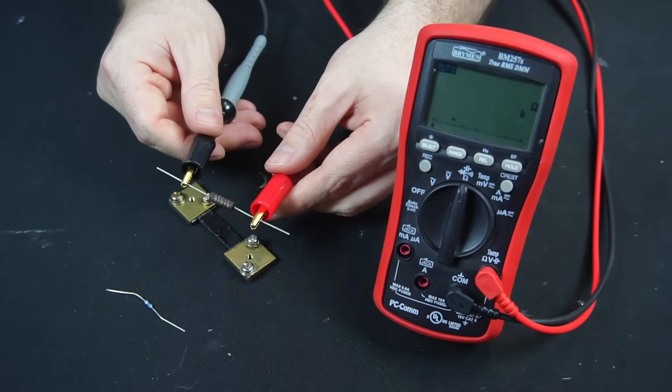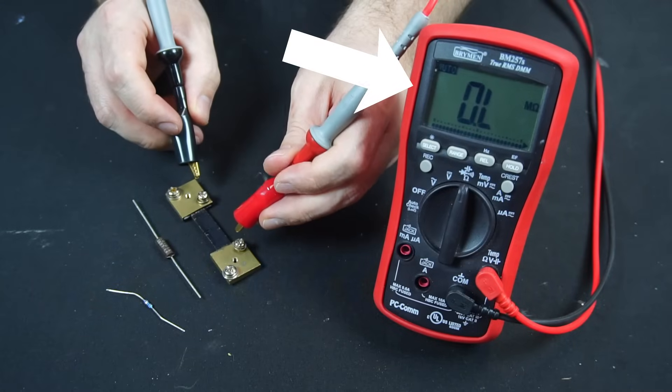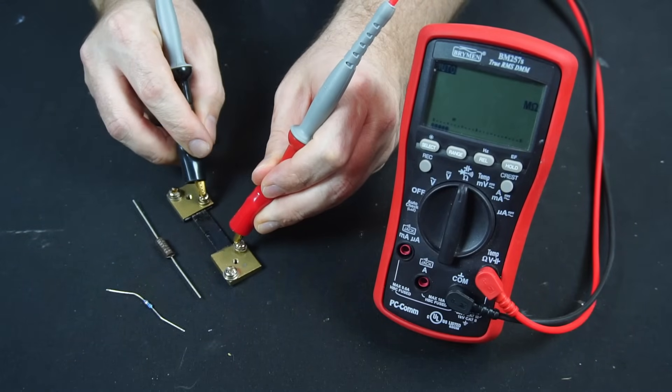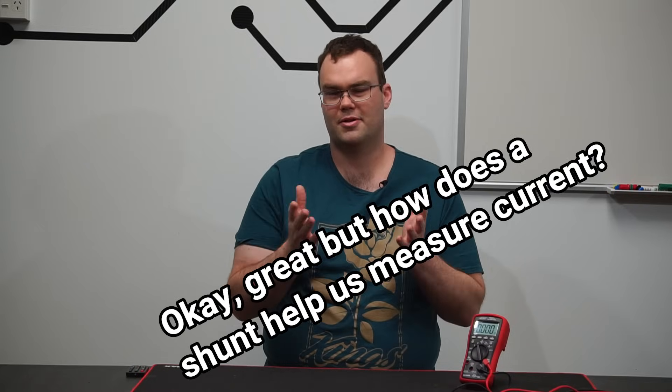However, they are unsuitable for measuring the incredibly low resistance of the shunt. For example, you can see my meter reads all zeros while measuring the resistance of both shunts. Now although the resistance is incredibly low, it is there and that's what makes a shunt useful. So basically, a shunt is a low value resistor.